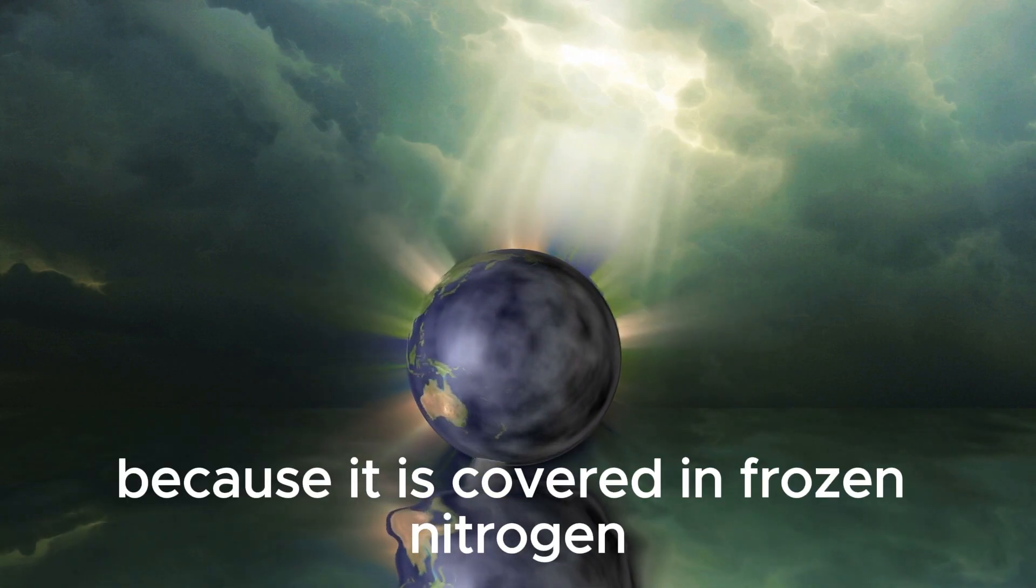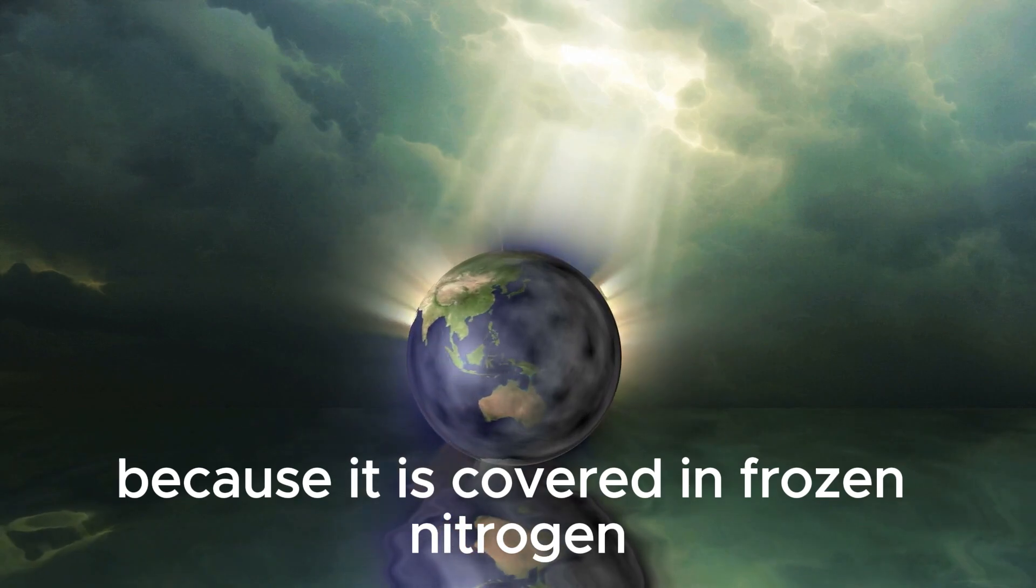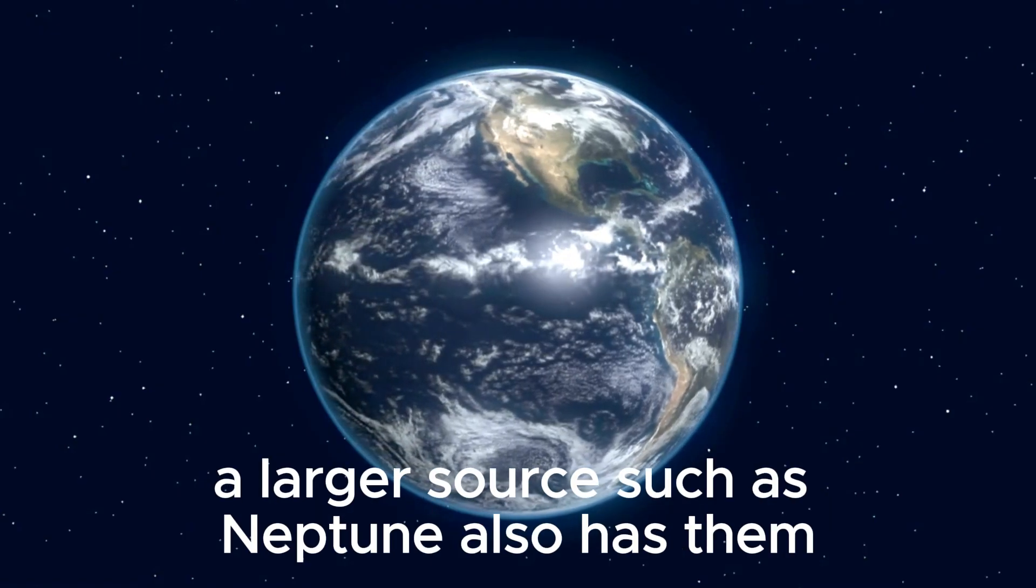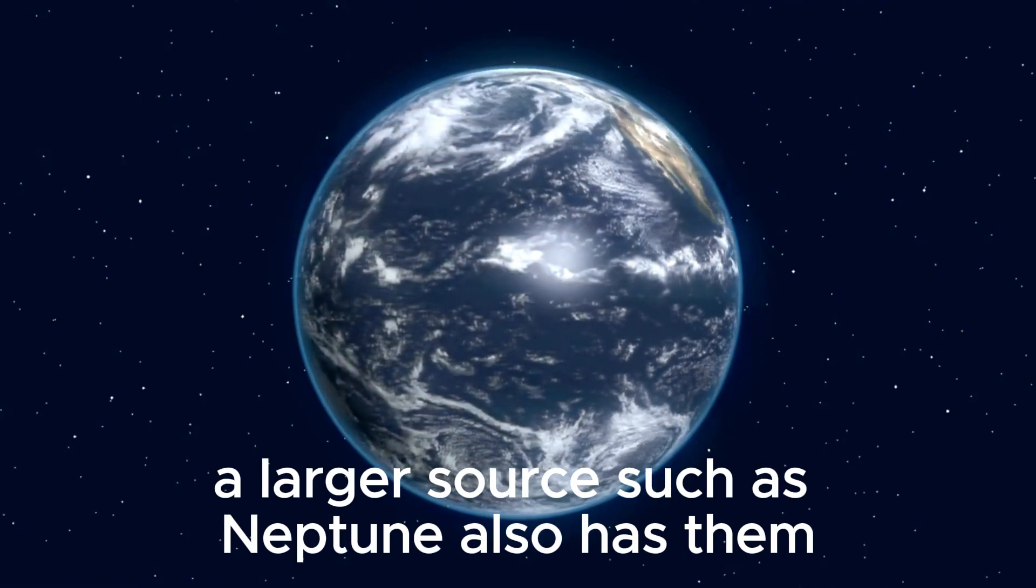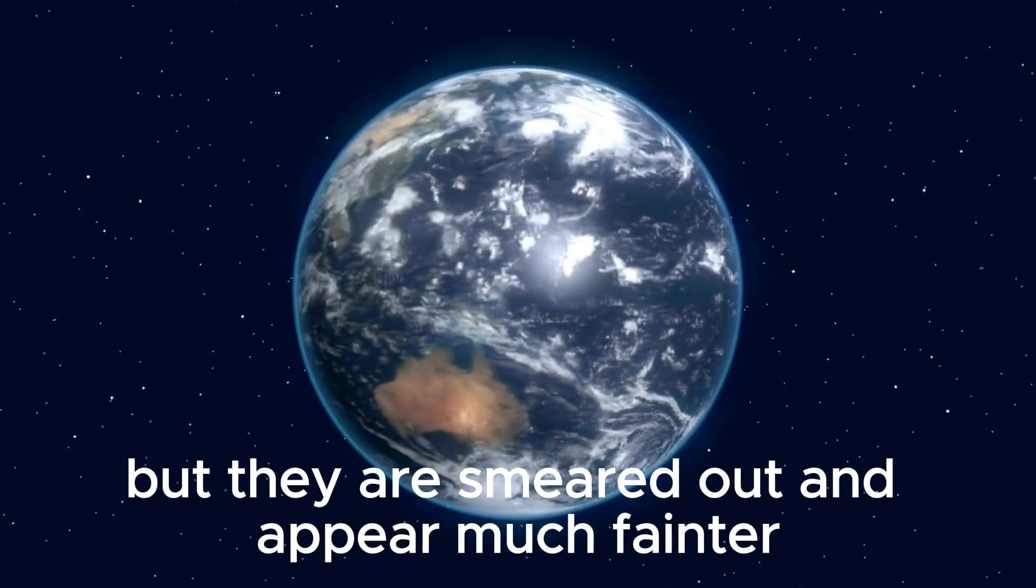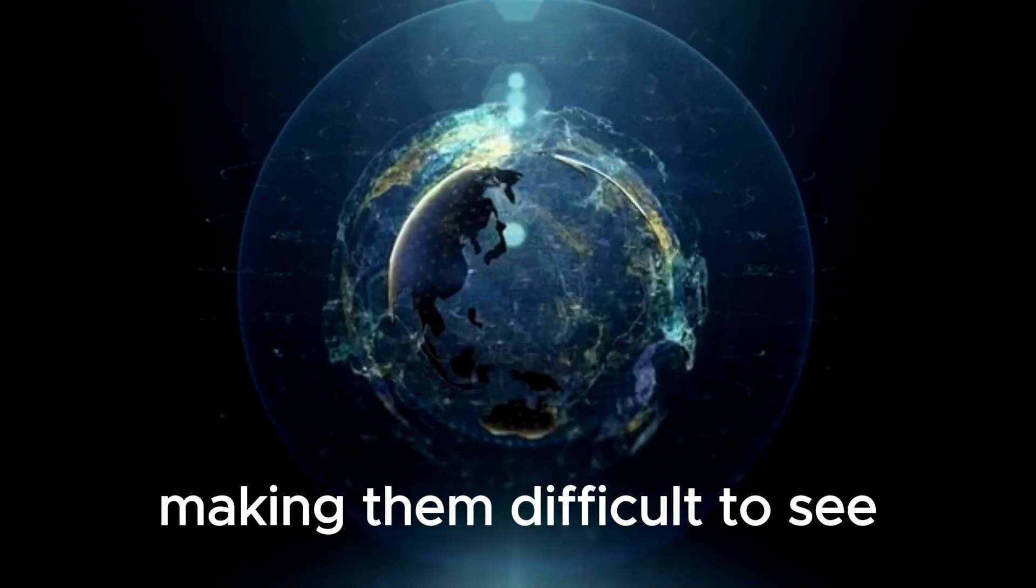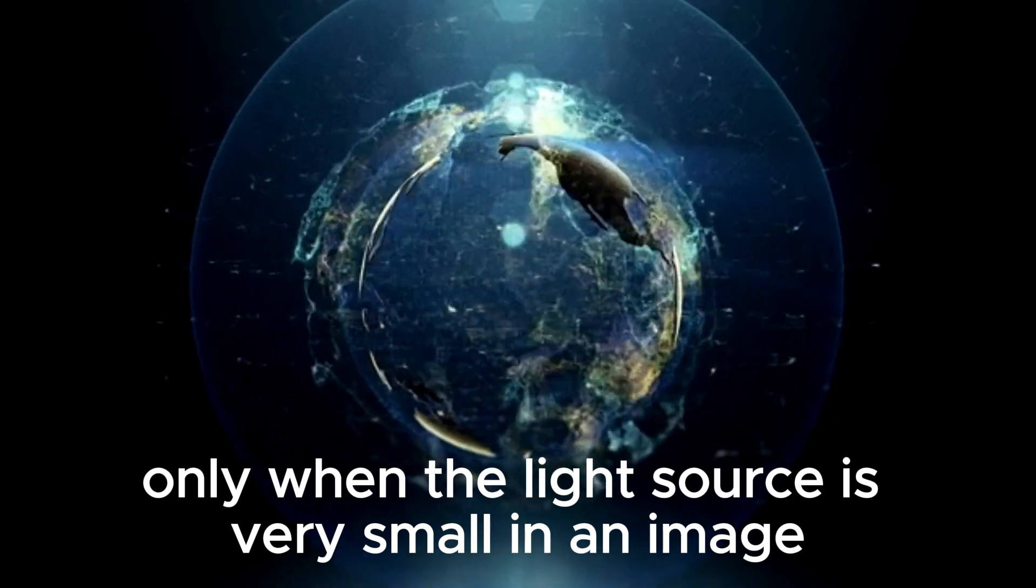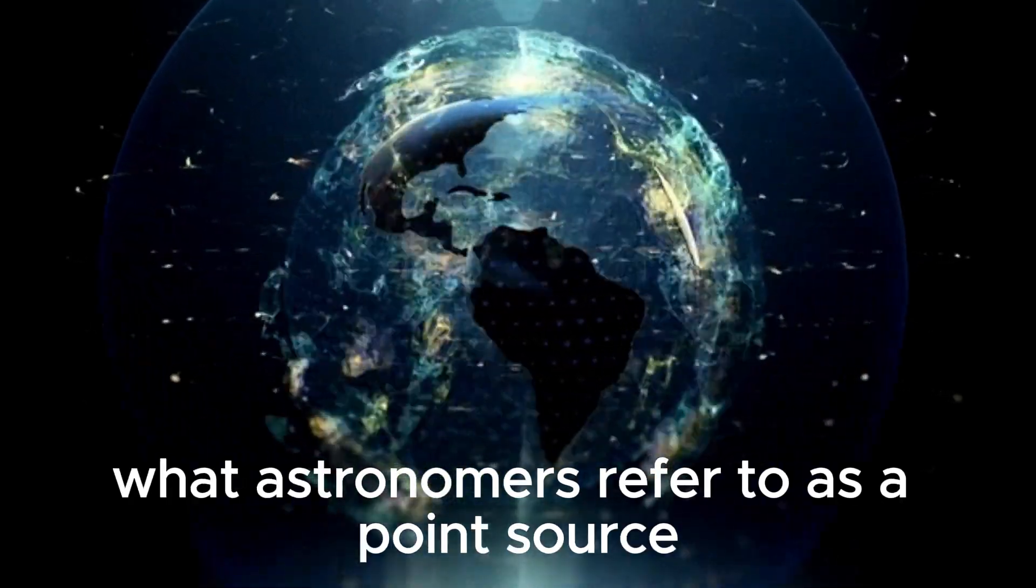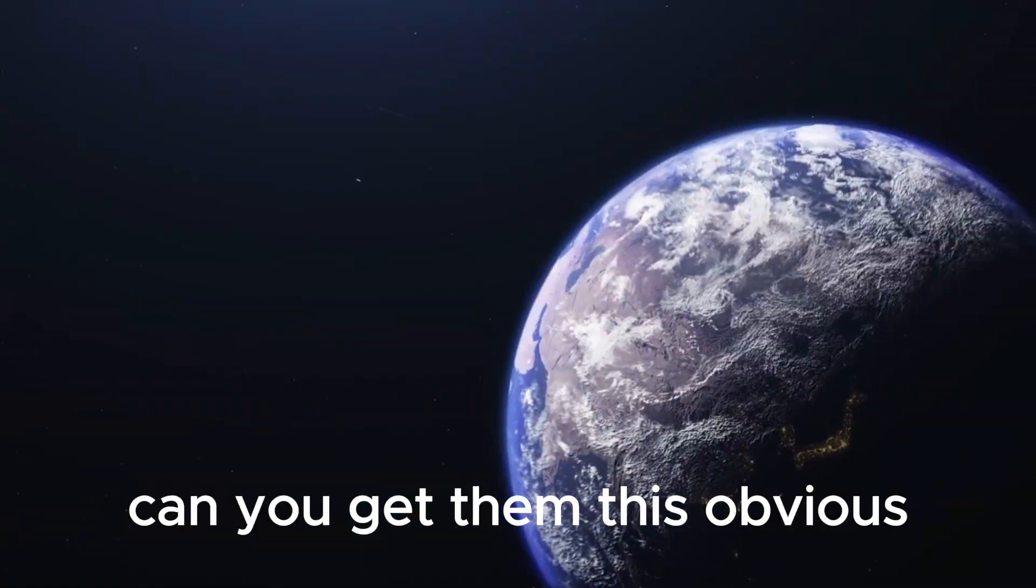It appears bright because it is covered in frozen nitrogen, which is highly reflective. A larger source such as Neptune also has them, but they are smeared out and appear much fainter, making them difficult to see only when the light source is very small in an image. What astronomers refer to as a point source? Can you get them?